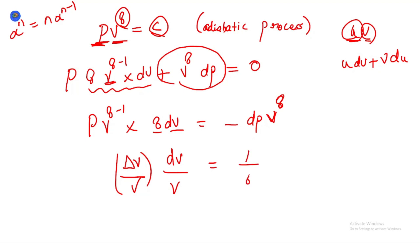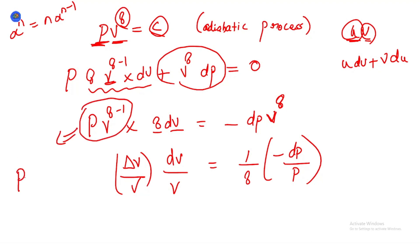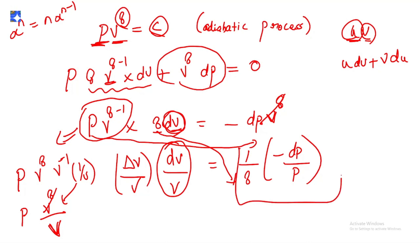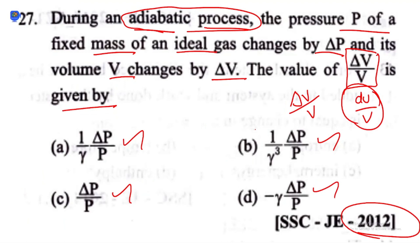This gives dV/V = (1/γ)·(−dP/P). To see this: P·V^(γ−1) can be rewritten as P·V^γ·V^(−1) = V^γ/V, so V^γ cancels, leaving dV/V. Bringing P and γ to the other side gives the expression. The correct answer is option A.